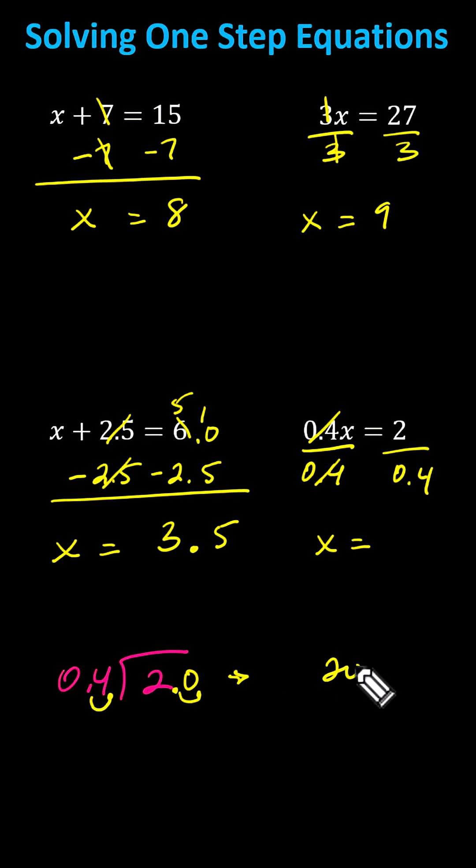Which gives us 20 divided by four, which is equal to five. The solution is x equals five. I hope you found this helpful.